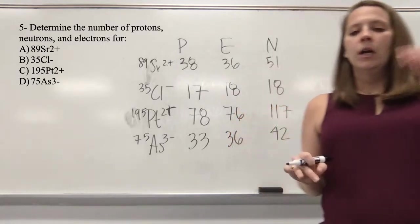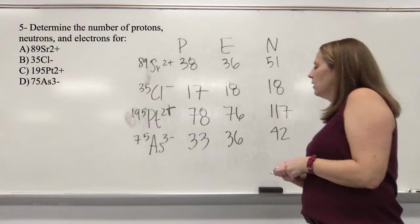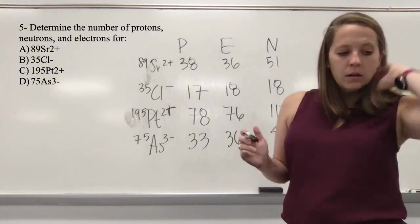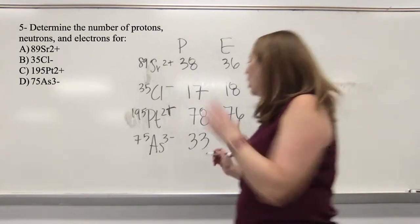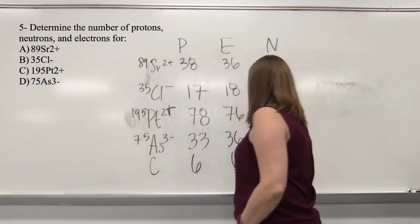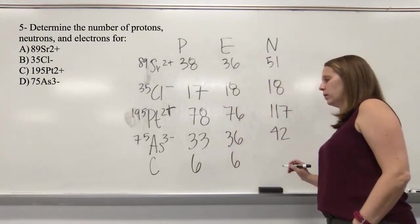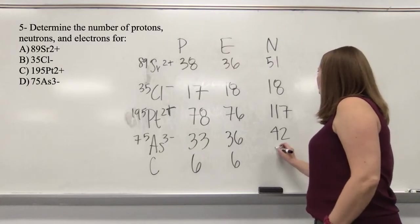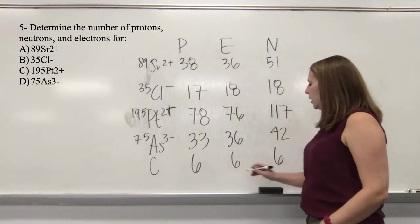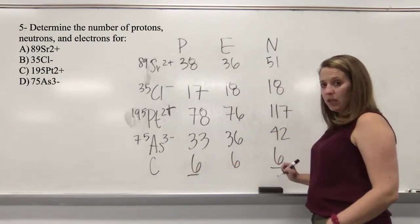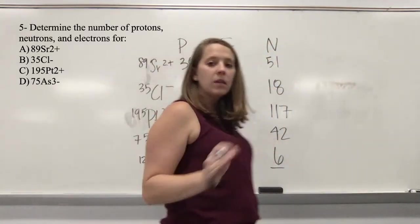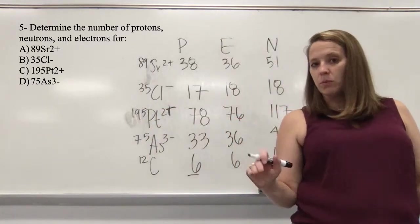What if I didn't give you the mass number? Let's look at carbon: if we know there are 6 protons, 6 electrons, and 6 neutrons, we can come up with the mass number. Mass number = protons + neutrons = 6 + 6 = 12. That was not on the worksheet — I just made it up so we could see an example.